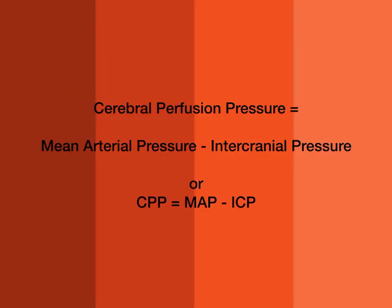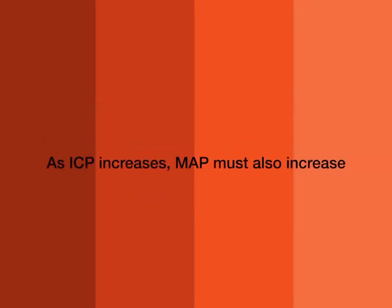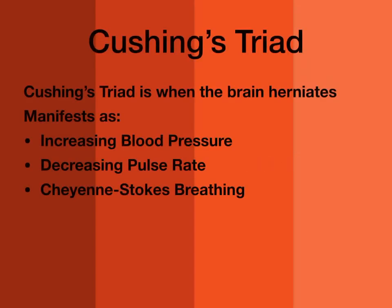Cerebral perfusion pressure is the amount of pressure that we need to have blood going to the brain. It's the mean arterial pressure minus the intracranial pressure, so CPP equals MAP minus ICP. As our intracranial pressure goes up, our blood pressure must also increase to overcome it so we can keep blood flow going to the brain.